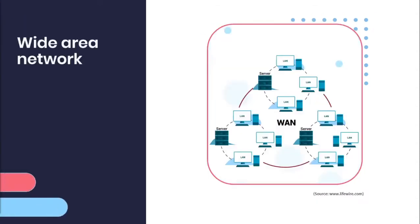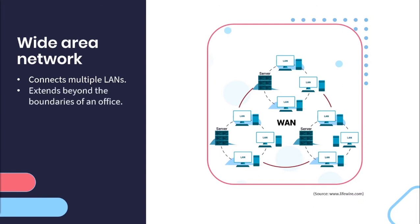A WAN or wide area network essentially connects multiple LANs, as seen in the architecture view — where multiple LANs are connected by one massive WAN. A WAN extends beyond the boundaries of an office space and can connect multiple buildings over various distances and locations, making it ideal for enterprise scale networks. It would be ideal for organizations that are massive and scalable and exist in various locations around the world to opt for a WAN instead of a LAN.